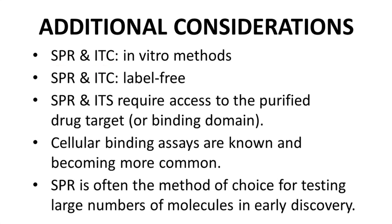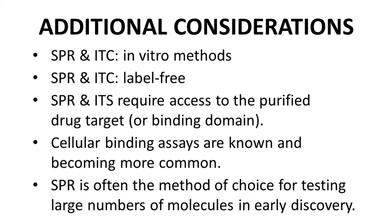SPR and ITC are both examples of in vitro assays. Older binding assay technologies require the drug or analyte compound to have a radioactive label; SPR and ITC do not. Both do require access to the purified drug target, or at least the binding domain portion of the target, which may be an option for some receptors. There are cellular assays that measure binding, and these assay formats are becoming more broadly available. Overall, SPR is often the method of choice for rapidly testing target engagement for a large collection of molecules.